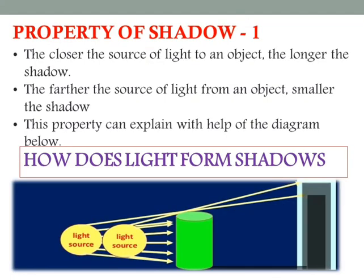Let's see in detail the first property of shadow. The closer the source of light to an object, the longer the shadow; the farther the source of light from an object, the shorter the shadow. This property can be explained with the help of a diagram. Light rays travel in a straight line by radiating out from the light source. If rays are blocked by an opaque object, a shadow forms where the light cannot reach. If the light source moves closer to the object, more light is blocked and a larger shadow is formed. The wall or ground behind the opaque object is the screen, and on this screen a dark patch or shadow is formed.